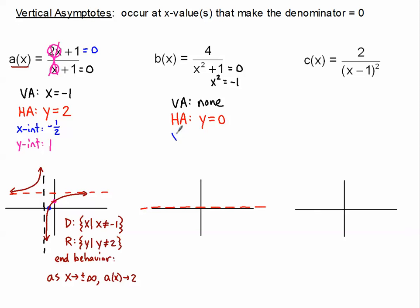Let's do our x-intercept. We set the numerator equal to 0. Obviously, 4 will never equal 0, so there are no x-intercepts. The horizontal asymptote covered the x-axis, so it makes sense. For the y-intercept, we plug 0 in for x: 0 squared goes away, giving us 4 divided by 1, so our y-intercept is 4.